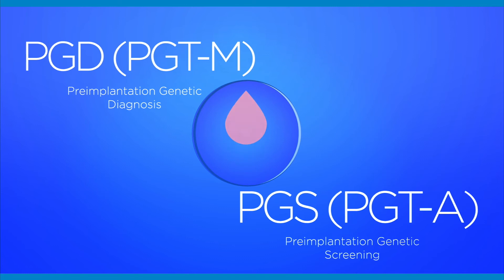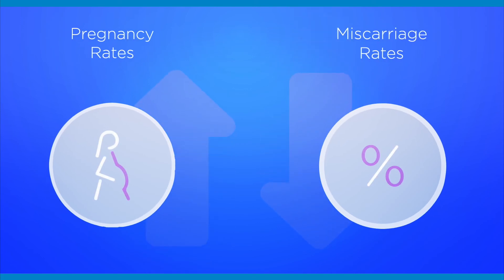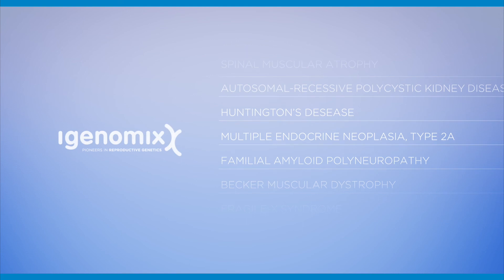Specifically, PGS detects alterations in the normal number of chromosomes of the embryo, increasing implantation rates, pregnancy rates per transfer and decreasing rates of miscarriage.